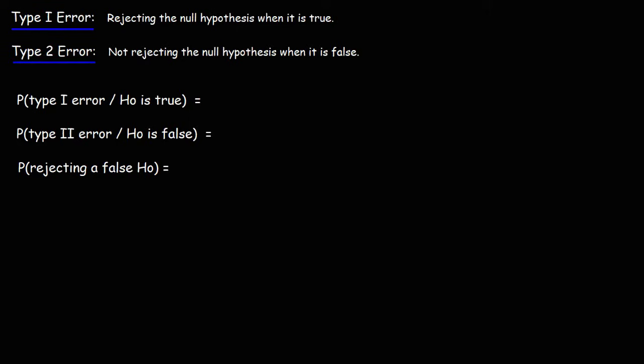The probability of making a type 1 error given that the null hypothesis is true is alpha. The probability of making a type 2 error when H0 is false is beta. And the probability of rejecting a false null hypothesis is 1 minus beta, which is also referred to as the power of the test.